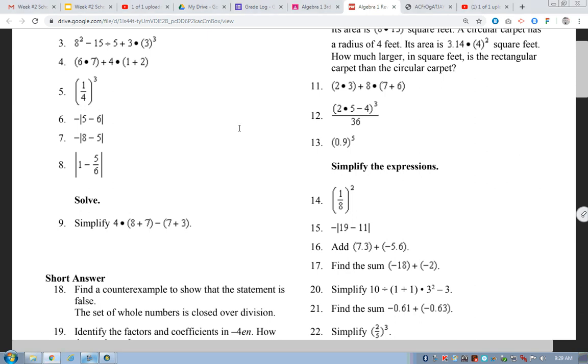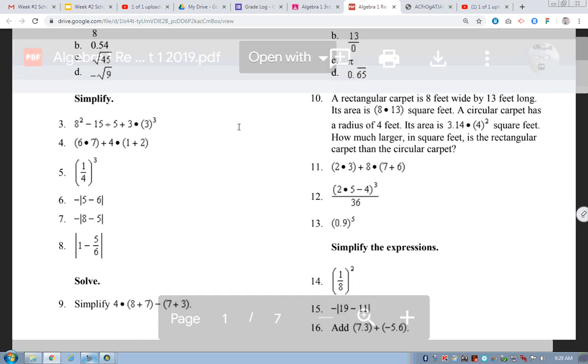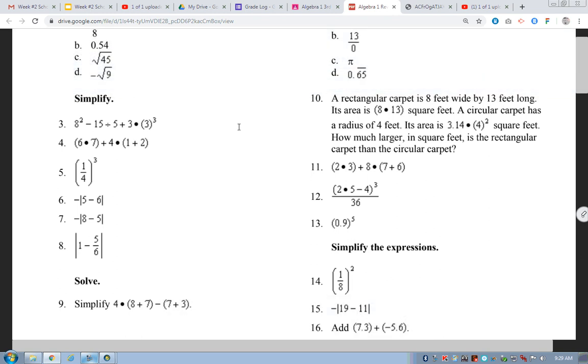Okay? Let's come up to number 10. A rectangular carpet is 8 feet wide by 13 feet long. Its area is 8 by 13 square feet. A circular carpet has a radius of 4 feet. Its area is 3.1 times 4 squared or pi r squared. How much larger in square feet is the rectangular carpet than the circular carpet? Well, that's just a simple matter of go ahead and multiply 8 by 13. Right? Get that answer. Then take 3.14 times 4 squared. Get that answer. Subtract the smaller one from the bigger one. Right? Anything here that's too hard?